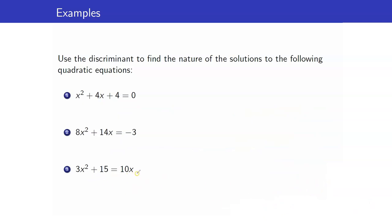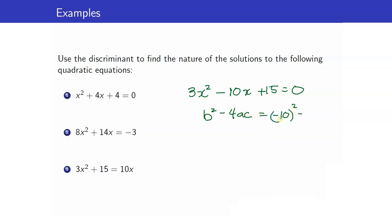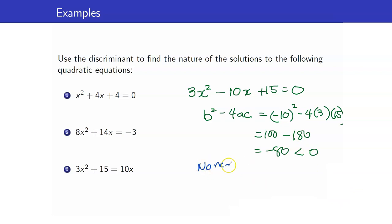Next, let's have 3x squared plus 15 equals 10x. Writing it in standard form with one side equal to 0. Our b squared minus 4ac is equal to negative 10 squared minus 4 times 3 times 15, which gives 100 minus 180, hence negative 80, which is less than 0. Therefore, we have no real solutions, or equivalently, we have two imaginary solutions.